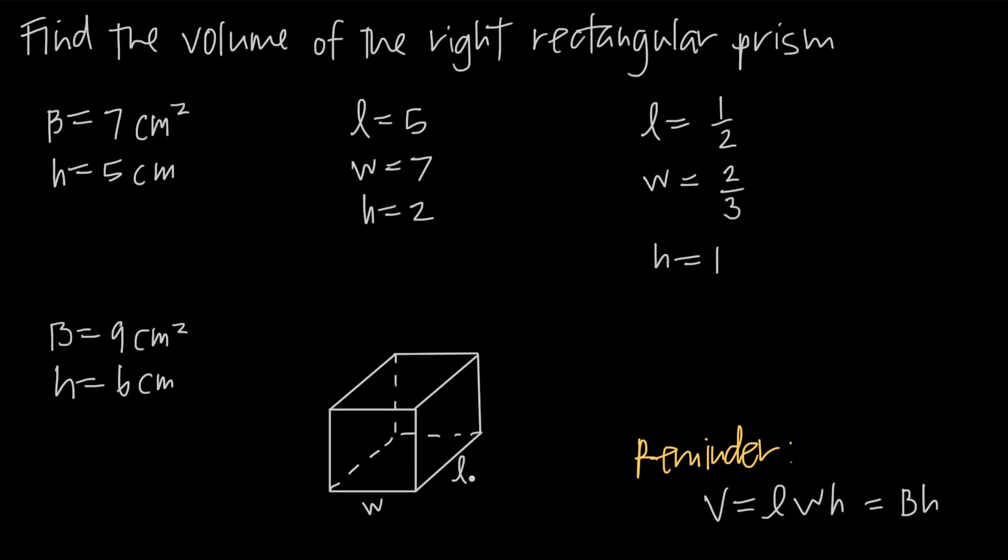So if we say this is the width, this is the length, and this is the height, to find the volume, we just multiply the width by the length by the height.